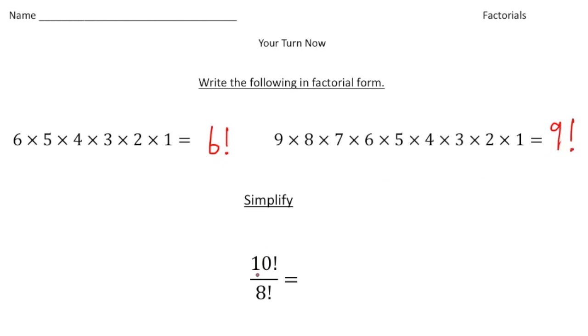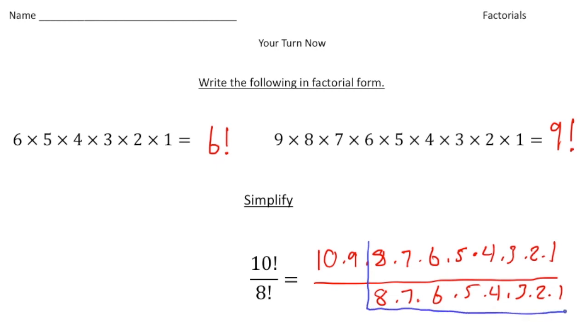And then finally, we want to simplify this expression. 10 factorial over 8 factorial. So it's going to be 10 times 9 times 8 times 7 times 6 times 5 times 4 times 3 times 2 times 1. That's going to be on the top. And then 8 times 7 times 6 times 5 times 4 times 3 times 2 times 1 is on the bottom. And if you remember, all of these are common factors. So what I'm going to do is I'm actually going to cross these off. And what's left over is 10 times 9, which equals 90. And there's your answer.